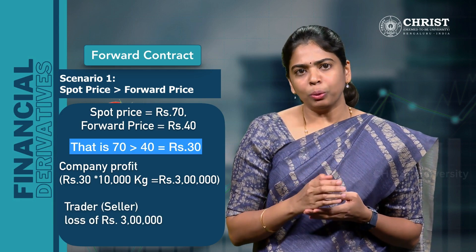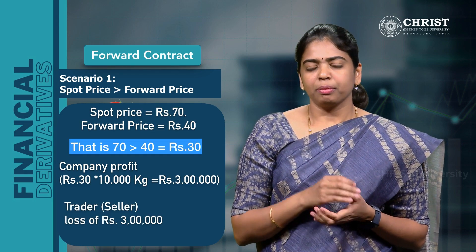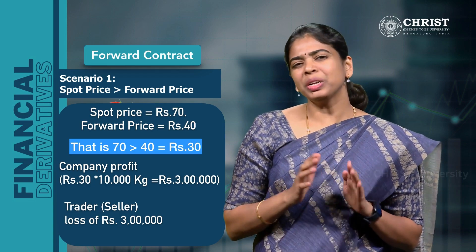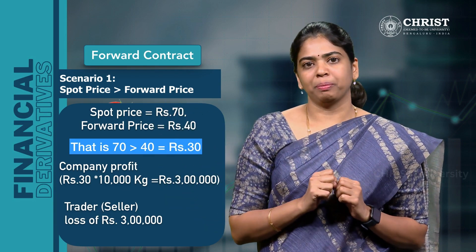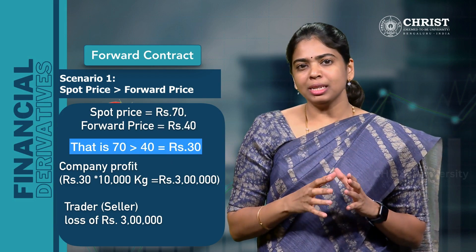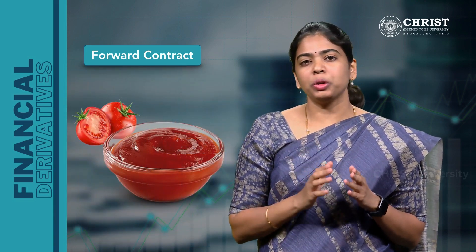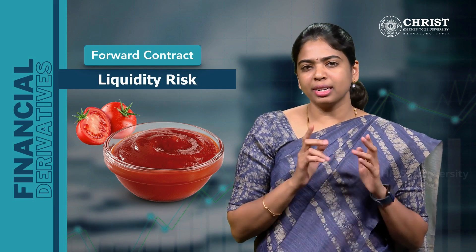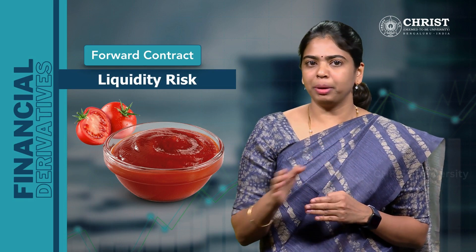Now, we know that in this forward agreement there is 3 months time for expiry. What if by the end of the first month the trader senses that the market might not work in his favour and wants to pull out of the contract midway? He can do so, provided he could find someone else in his place to continue the transaction. But finding that someone is going to be a Herculean task. Thus, it is very evident that the forward contract is subject to liquidity risk — it is not easy to get out of the contract midway.